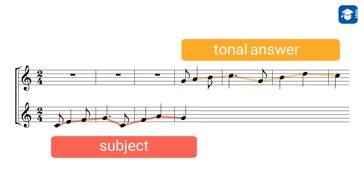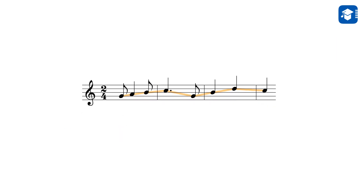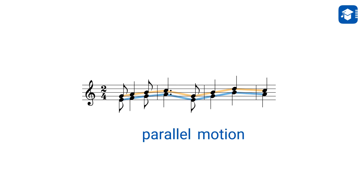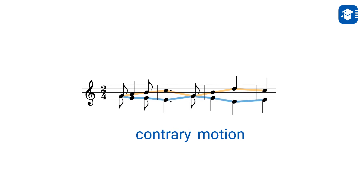The second voice has now entered the stage. What should the first voice do now? The answer is simple: accompany the other voice. The simplest way is to follow it in parallel motion, but this sounds rather uninspired. The basic idea of a Fugue is that all voices are independent and equally important — no voice is subordinate to another. One way to achieve this is to use contrary motion: when one voice moves up, the other voice moves down and vice versa.